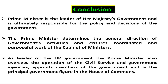Conclusion. We can say that the British Prime Minister is the leader of Her Majesty's government and is ultimately responsible for the policy and decisions of the government. The Prime Minister determines the general direction of the government's activities and ensures coordinated and purposeful work of the cabinet of ministers. As leader of the UK government, the Prime Minister also oversees the operation of the civil service and government agencies, appoints members of the government, and is the principal government figure in the House of Commons.